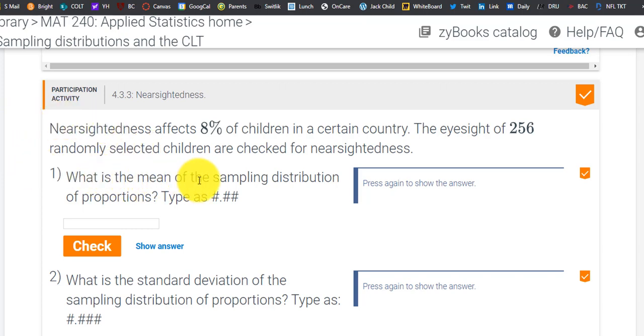What is the mean of the sampling distribution of proportions? So if we took all of the proportions and we found the average, what would that average be? Actually, it's the 8%. It's kind of given to us here. I press check answer. Boom, we get the correct answer.